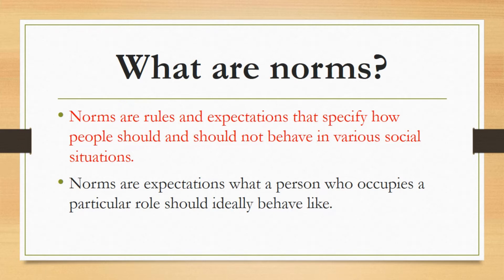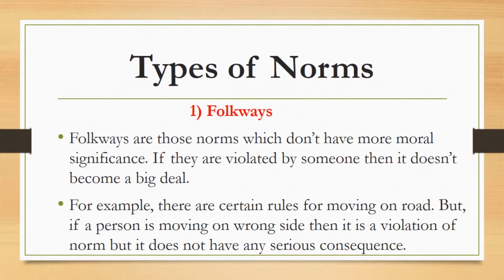From here we can say that norms are expectations of how a person who occupies a particular role should ideally behave. In the case of the waiter and you, the waiter is occupying a designation and it is expected that he would be dealing in a respectful way. If someone occupying a designation is not following the rules according to expectations, then it would be a violation of norms. This designation doesn't mean any official designation — it could be any social position, a relation, or anything else. So norms are particularly linked to actions and situations.